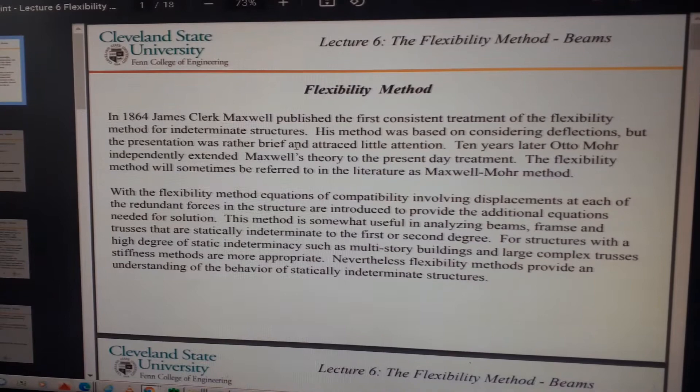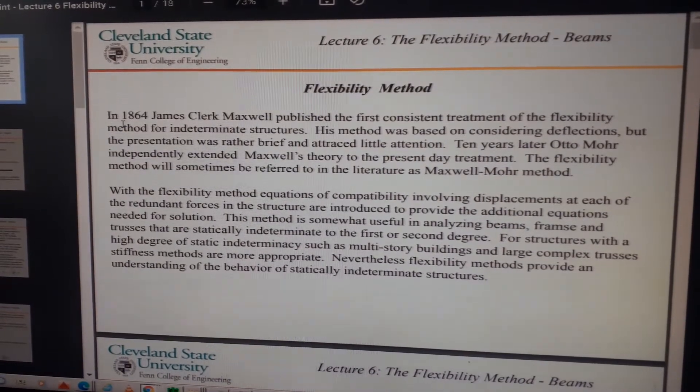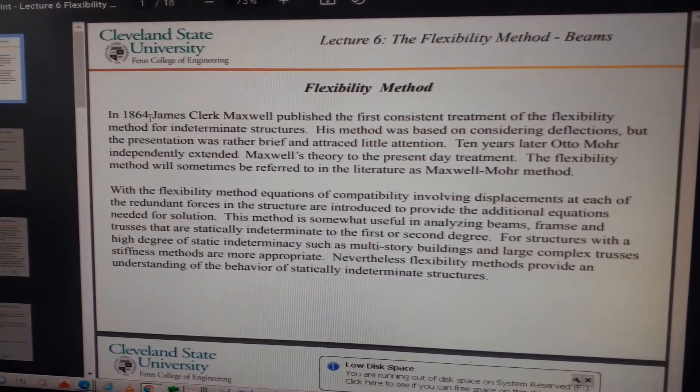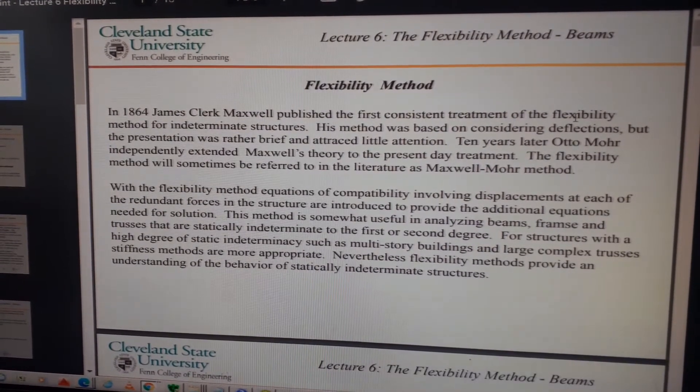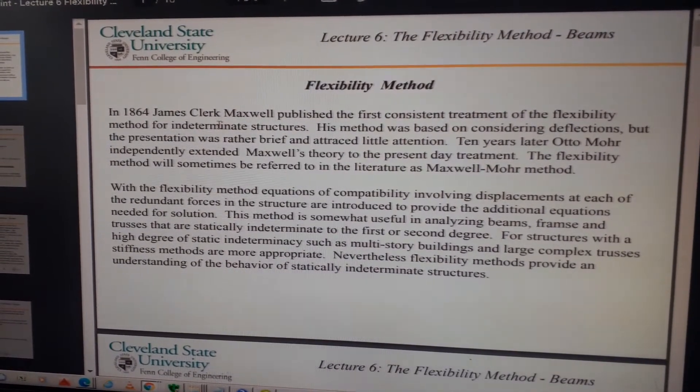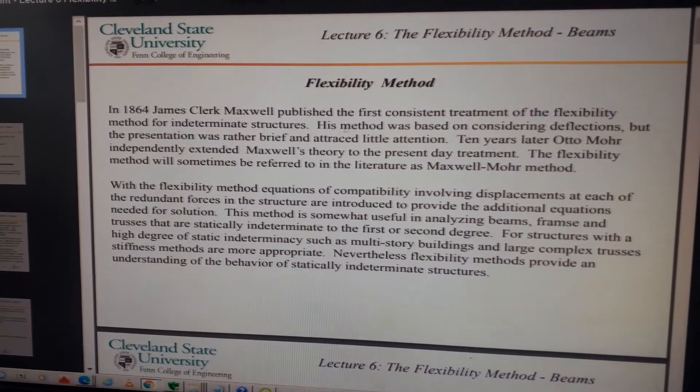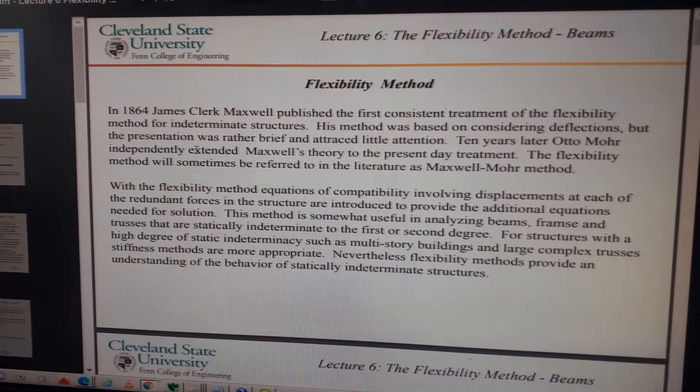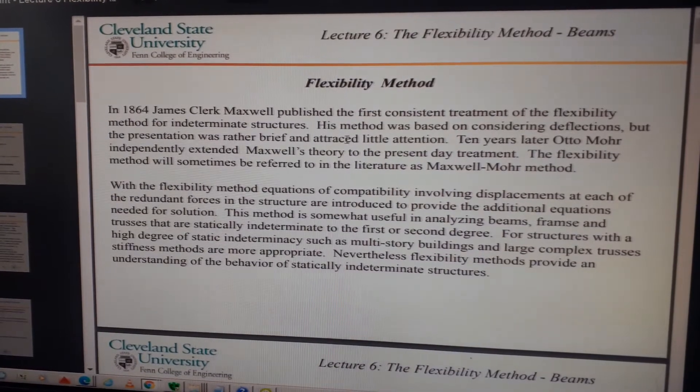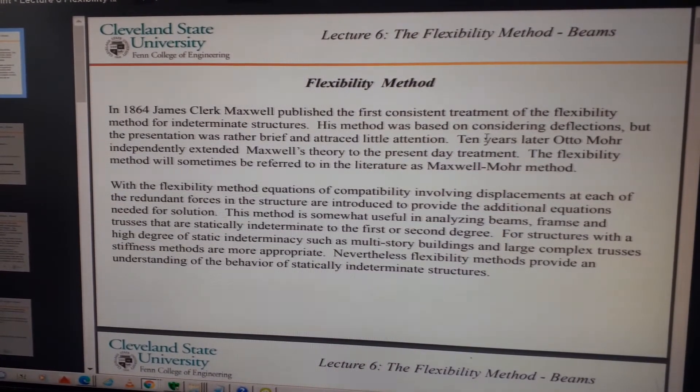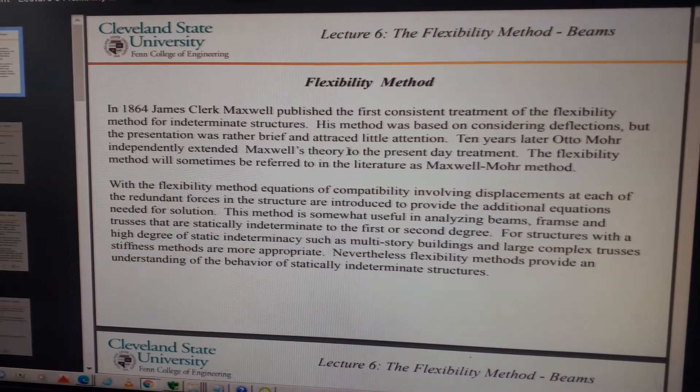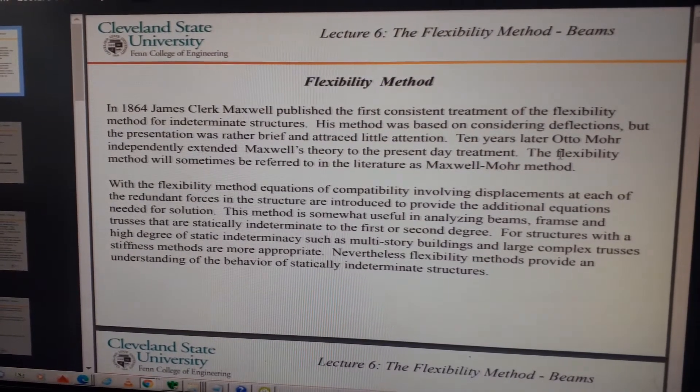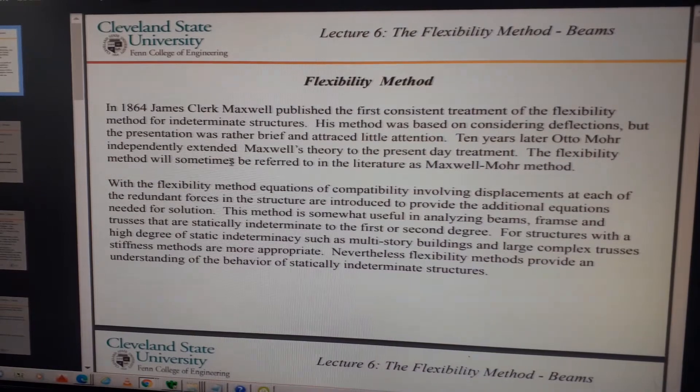In 1864, James Clerk Maxwell published the first consistent treatment of the flexibility method for indeterminate structures. His method was based on considering deflections, but the presentation was rather brief and attracted little attention. Ten years later, Otto Mohr independently extended Maxwell's theory to the present-day treatment.